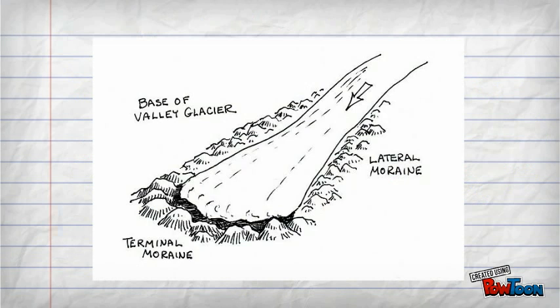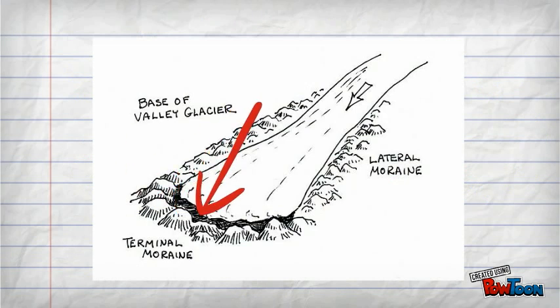The picture shows us a valley glacier. The arrow shows us where a terminal or end moraine would be located.